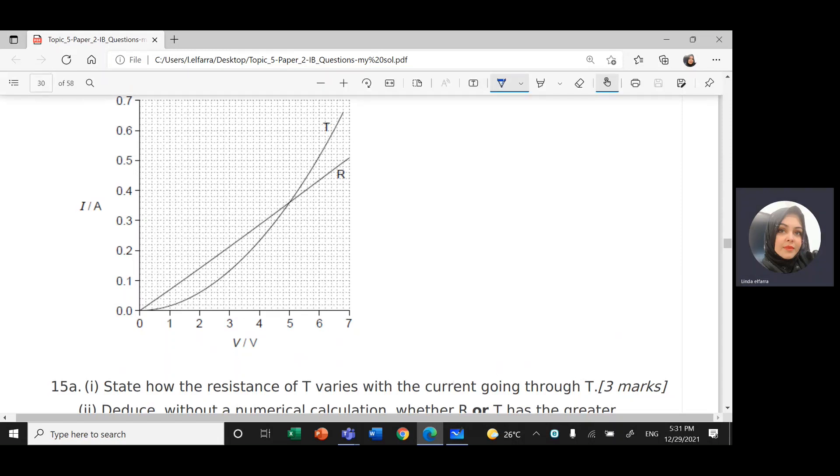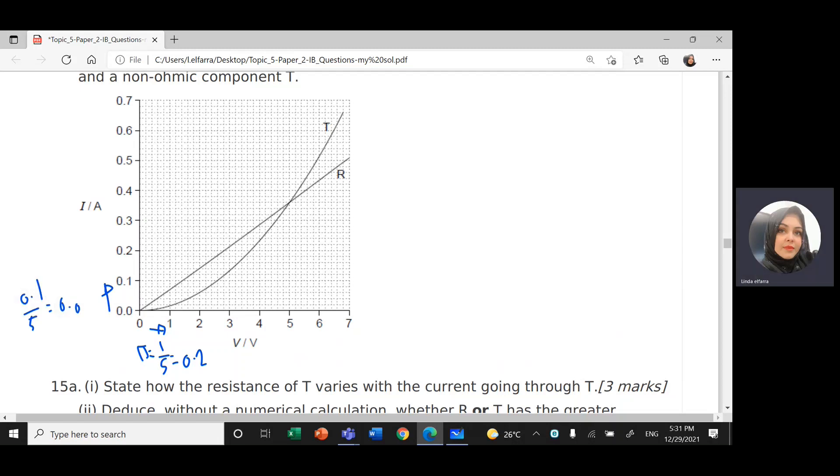For here, each square, I have 1 divided by 5 is 2, so here in this direction each square will represent 1 over 5, 0.2, and here 0.1 divided by 5 to give me 0.02. So this is each square.